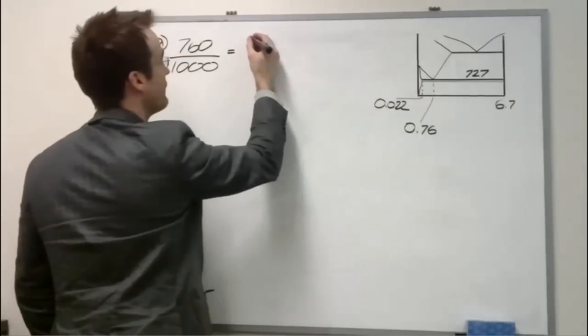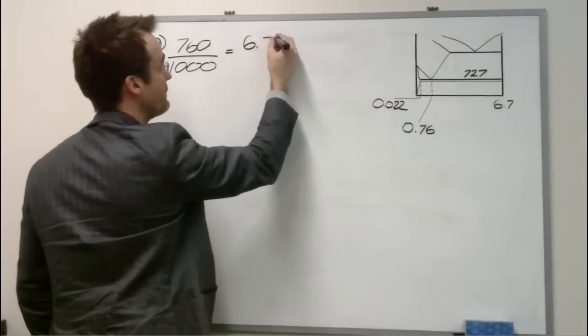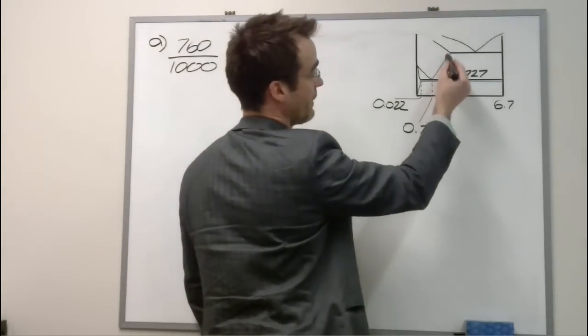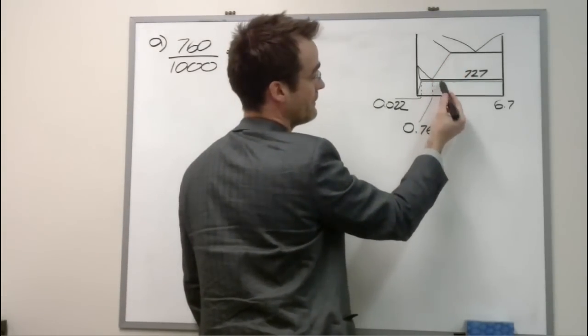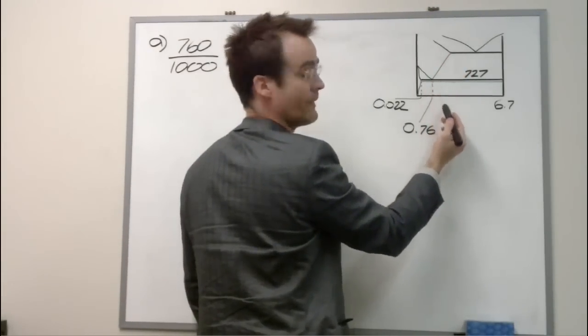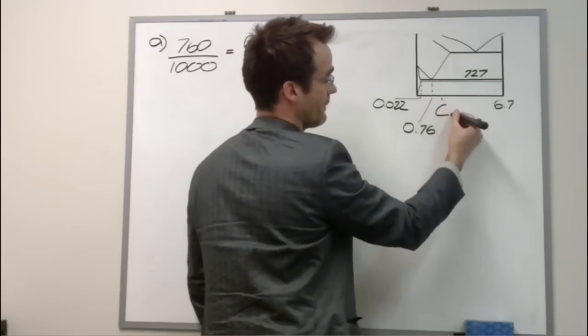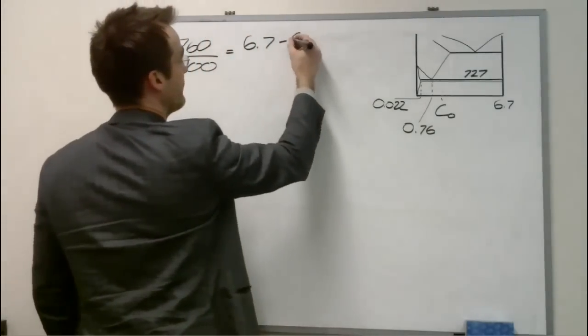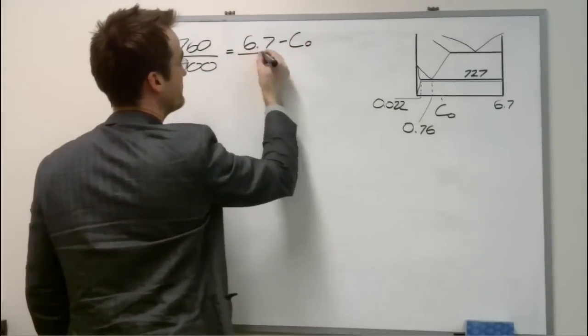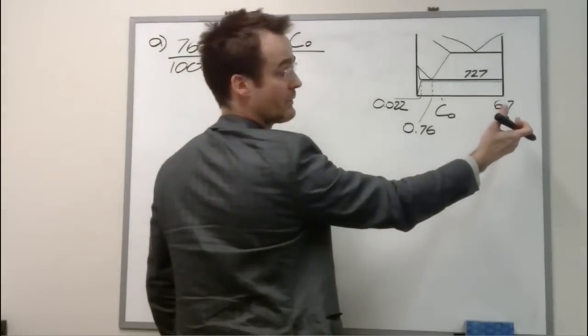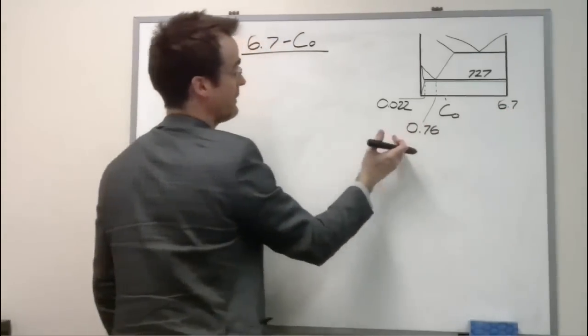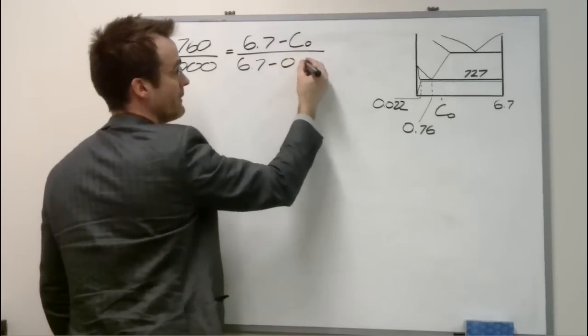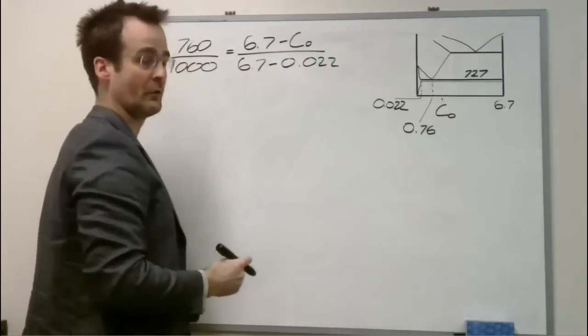6.7 minus the composition. Now remember, we said the composition is going to be somewhere in here. We don't yet know where it is. We'll call it C-naught, overall composition, over the total length of the tie line, 6.7 minus 0.022.